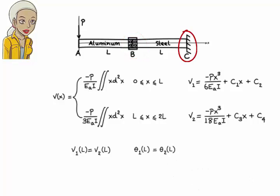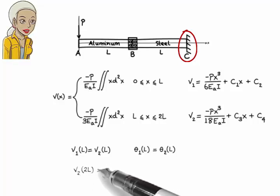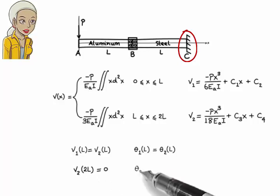The remaining two equations come from the support conditions at the fixed end of the beam. At point C, deflection and the slope of the elastic curve must be zero. That is, V2 at x equals 2L must be zero, and theta2 at 2L must be zero.